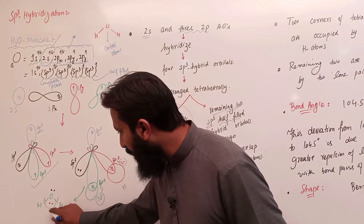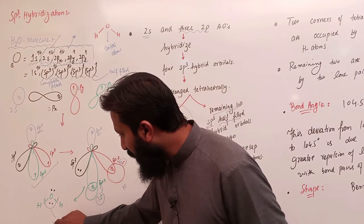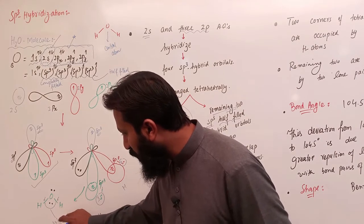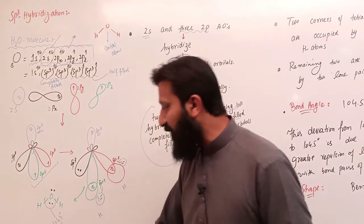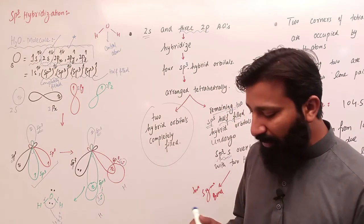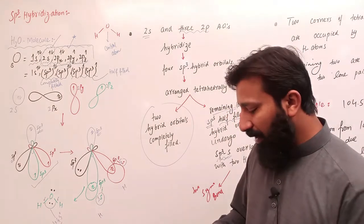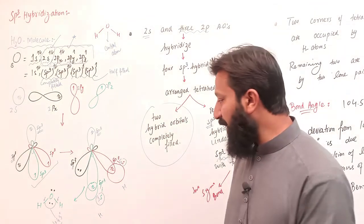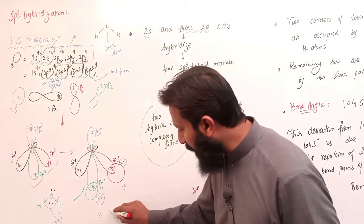The bond angle of water molecule is 104.5 degrees। Now we have to talk about why this angle is 104.5° and not the ideal tetrahedral angle of 109.5°। This is related to the tetrahedral structure and the effect of lone pairs।